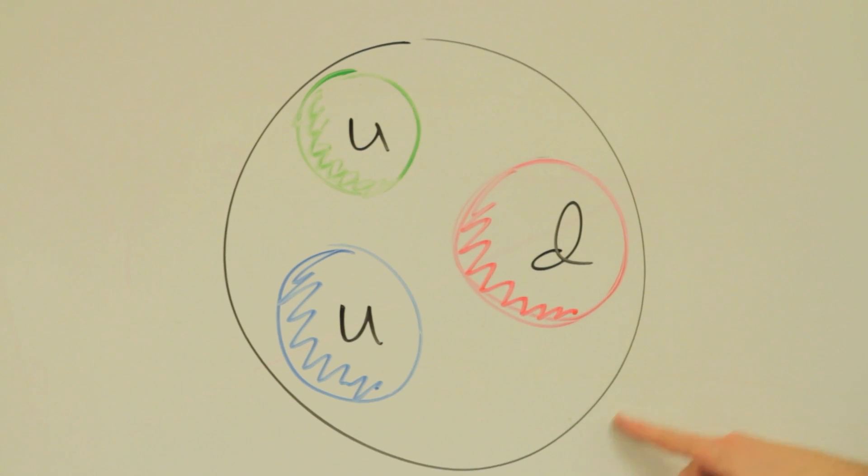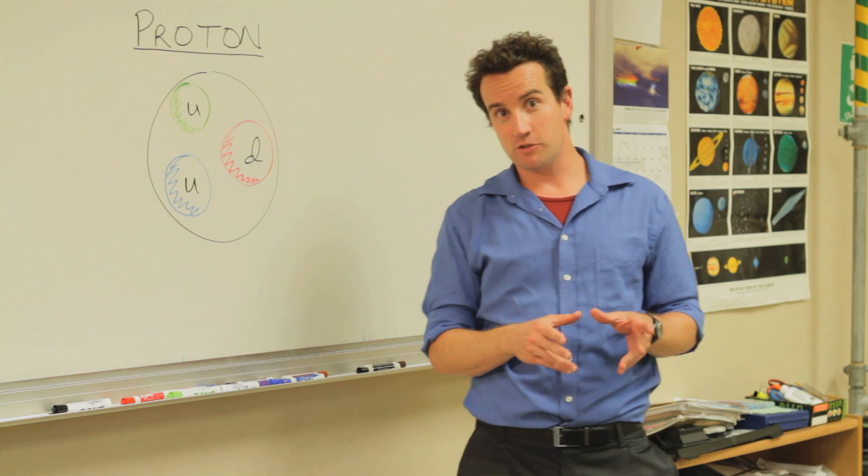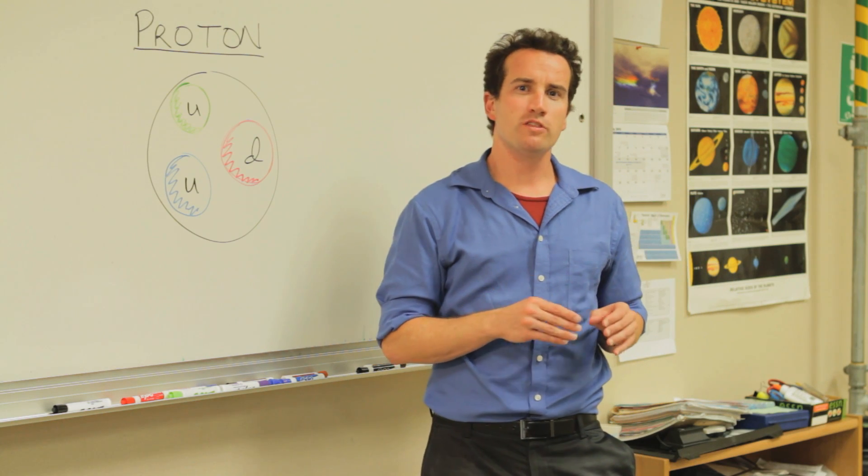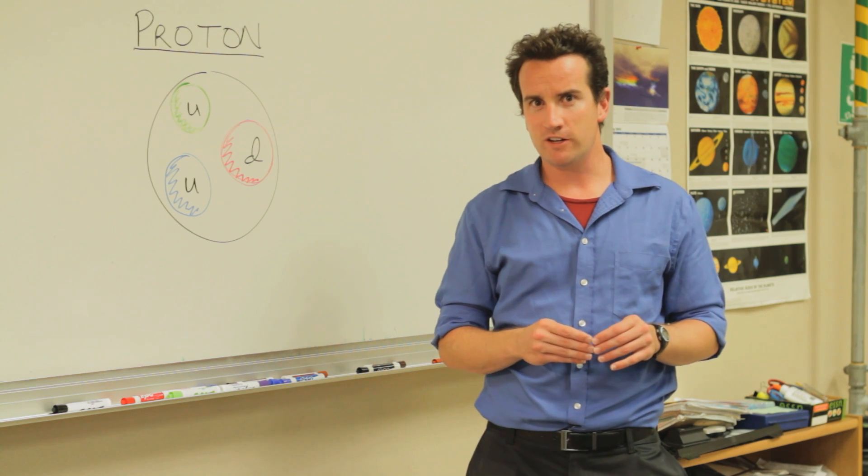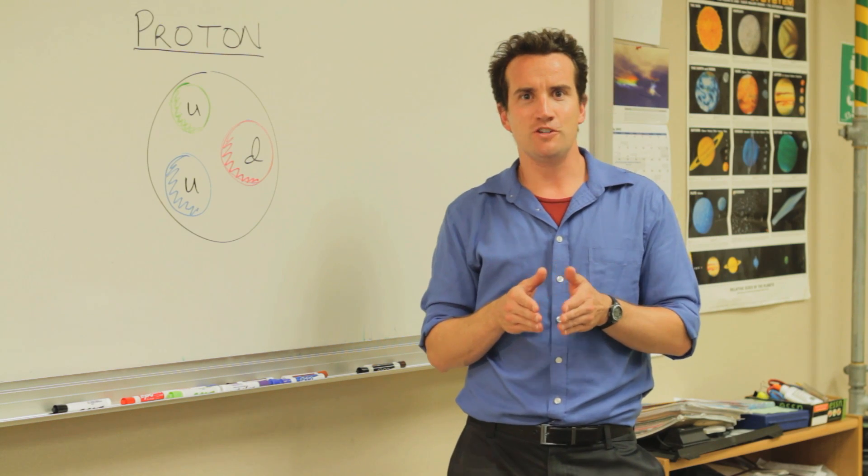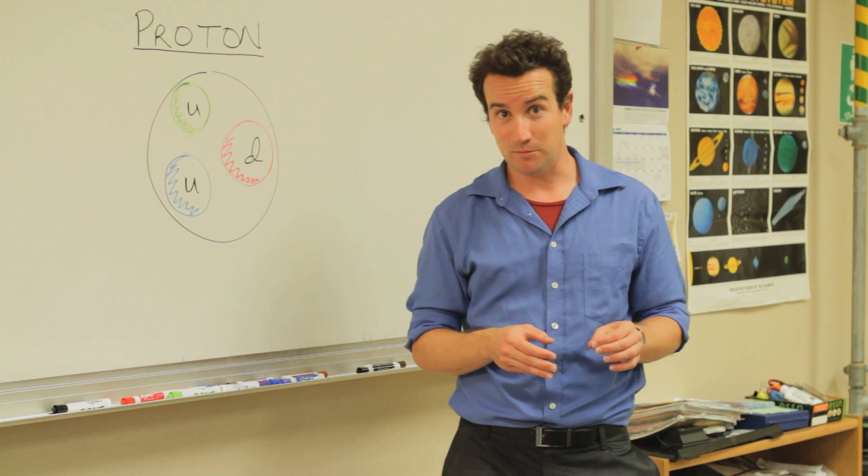Now, most people understand that a proton is a positively charged particle, and they also understand that it's very small. It's about one one hundred thousandth the size of a regular atom, that is, in radius. Like a fly in a cathedral. Very, very small compared to the size of an atom.